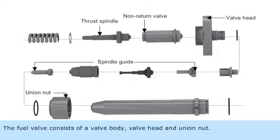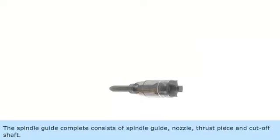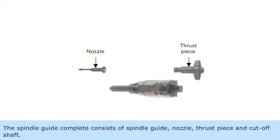The fuel valve consists of a valve body, valve head, and union nut. The non-return valve, thrust spindle with thrust spring, and spindle guides are assembled inside the valve body. The spindle guide complete consists of a spindle guide, nozzle, thrust piece, and cutoff shaft.